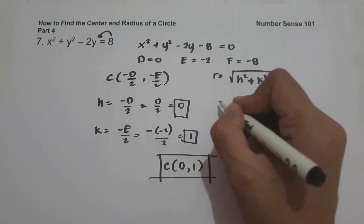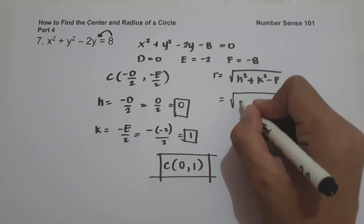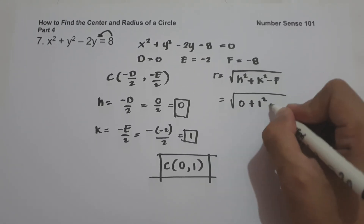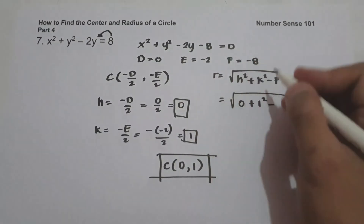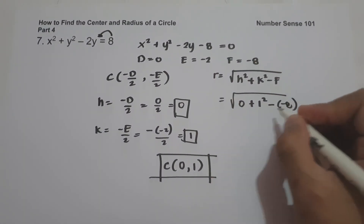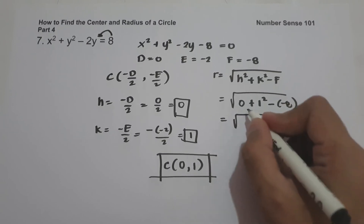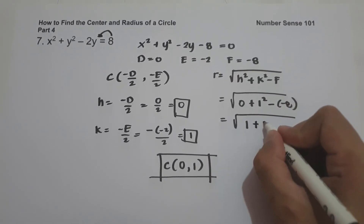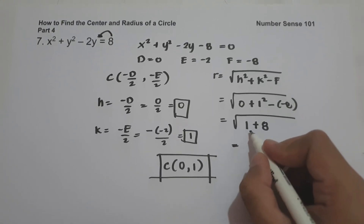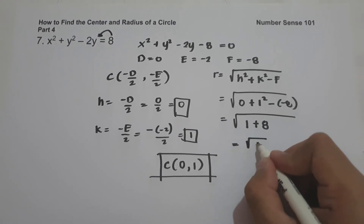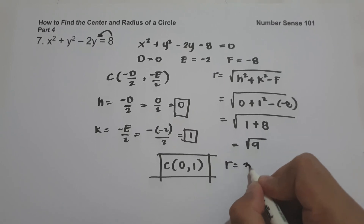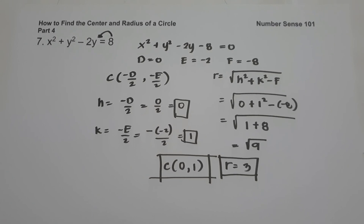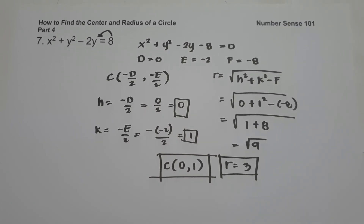For the radius: square root of h squared plus k squared minus f, which is square root of 0 plus 1 squared minus (negative 8). This gives square root of 0 plus 1 plus 8, which is square root of 9, and that is 3. This will be our answer. I hope you've learned from this video. Thank you so much for watching, and God bless us all.